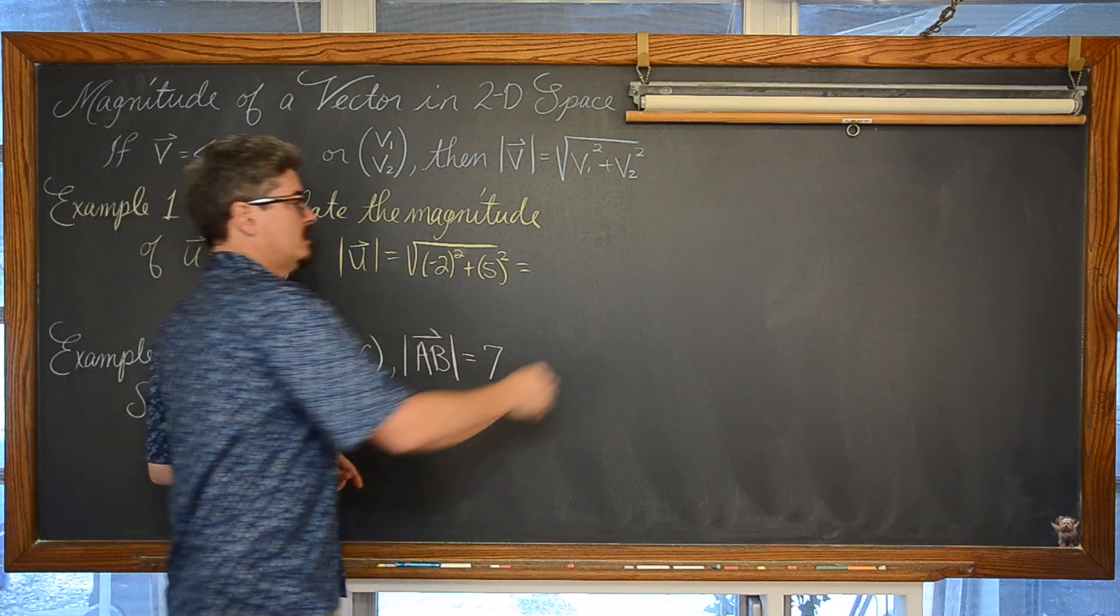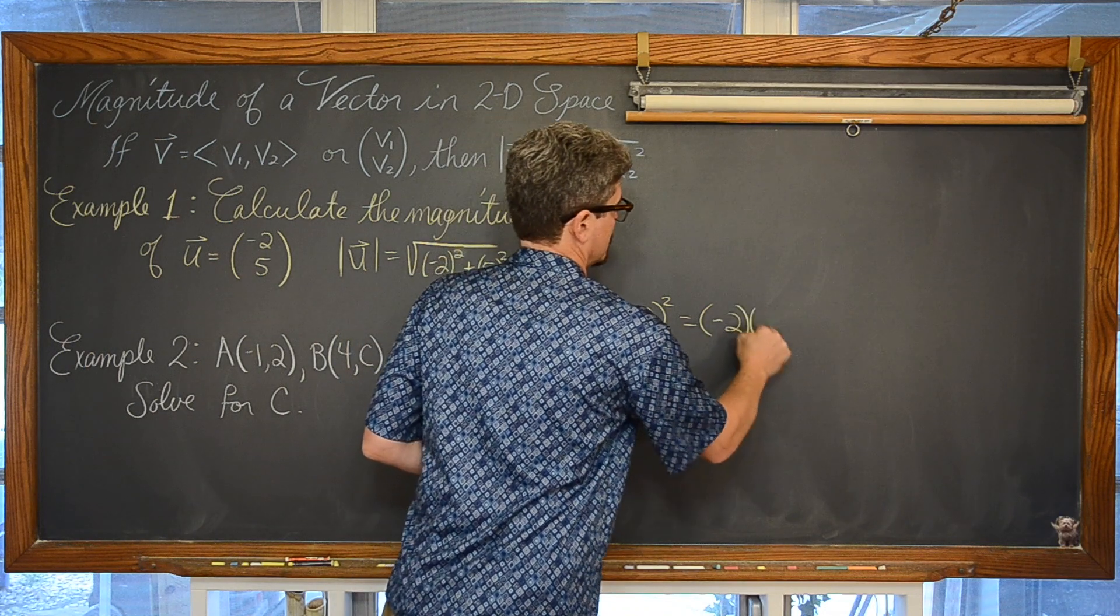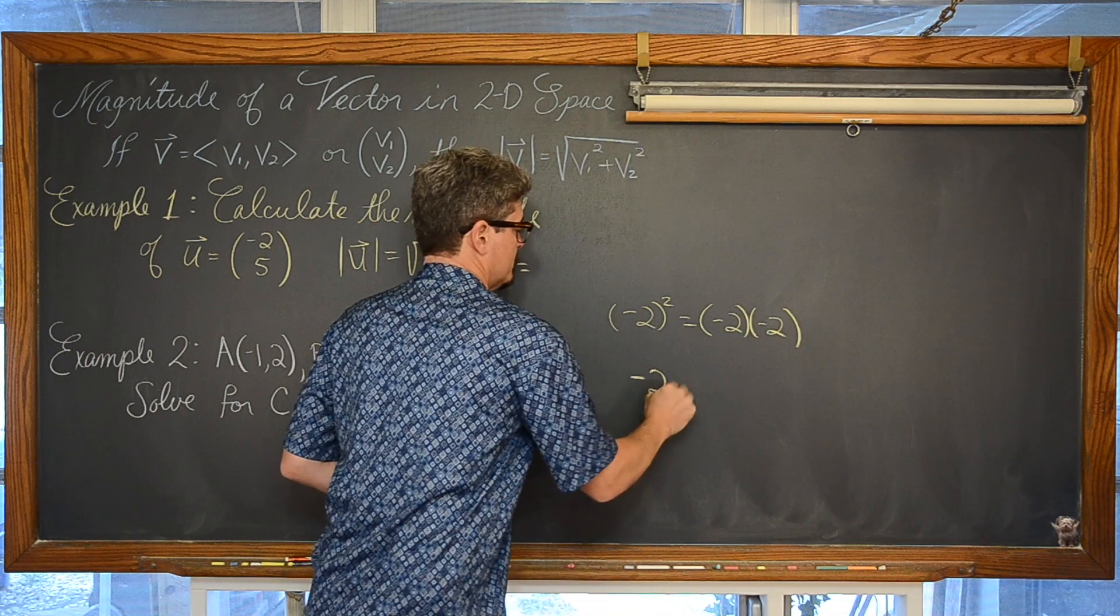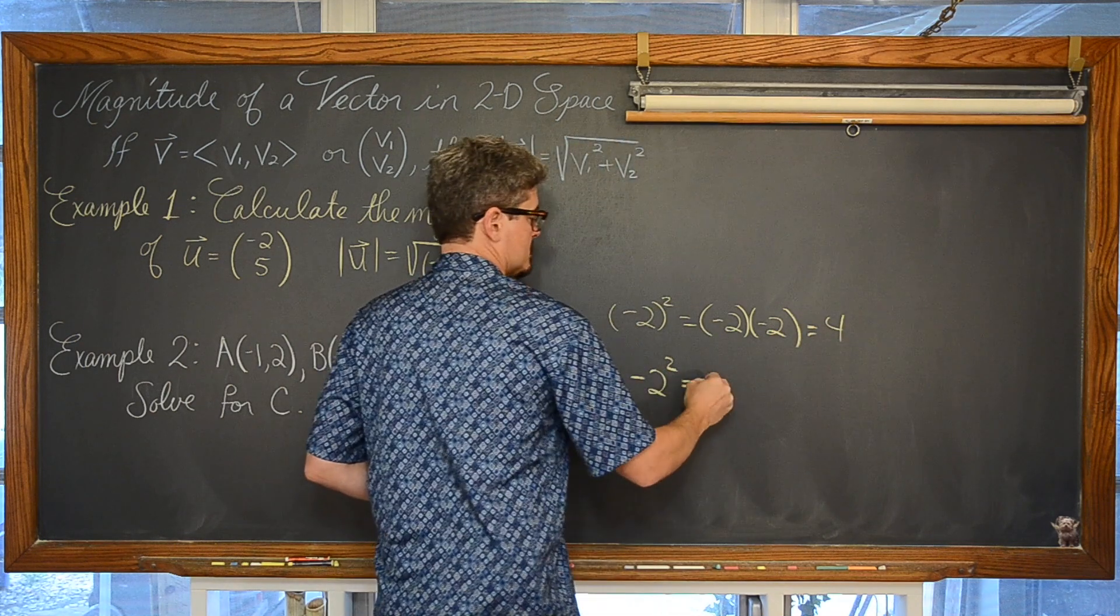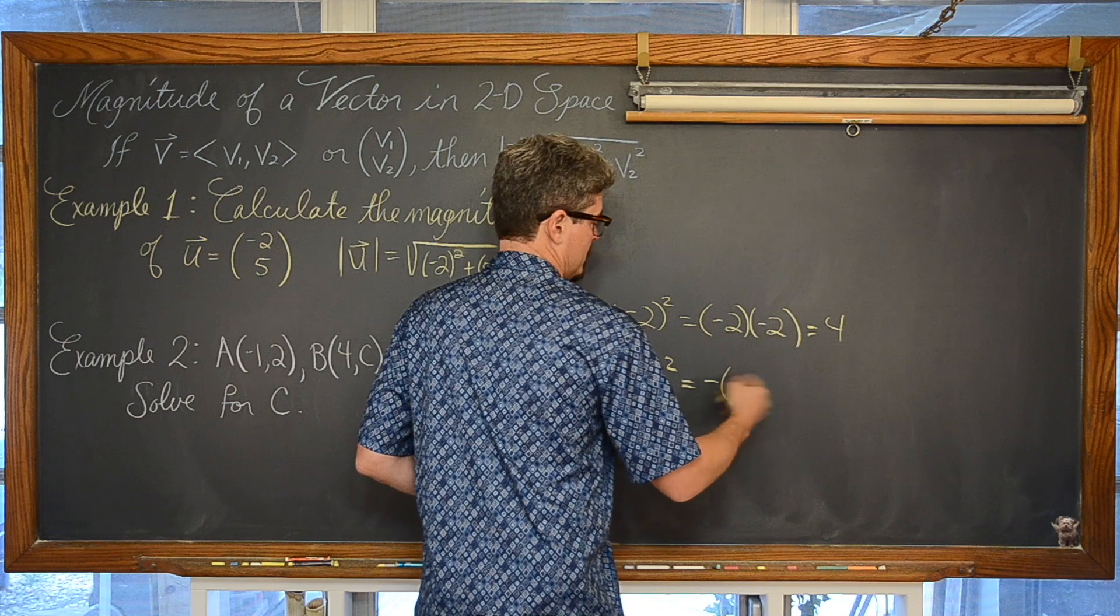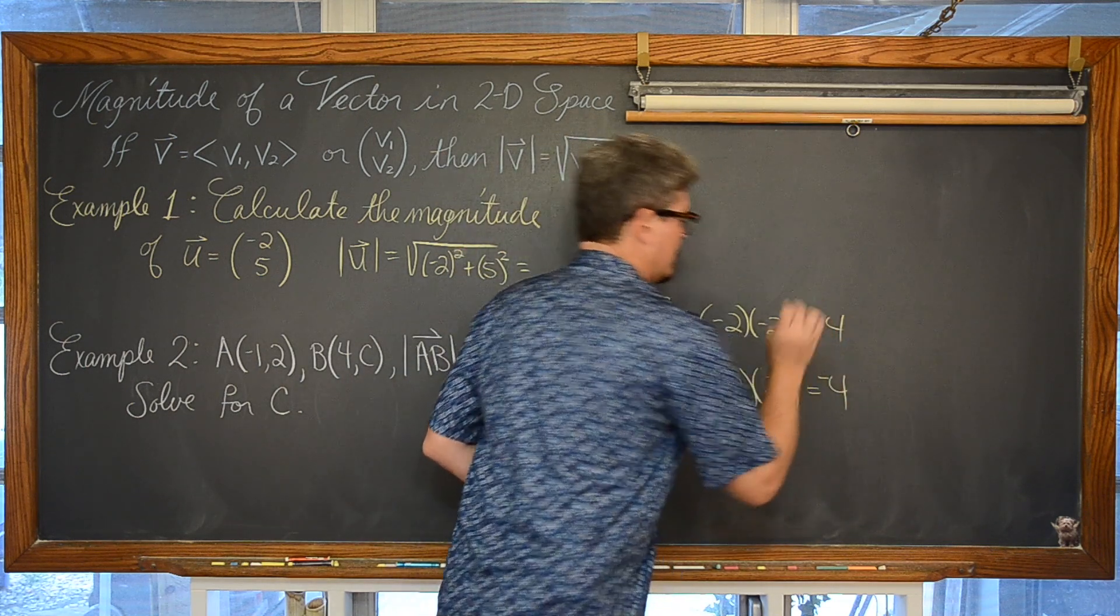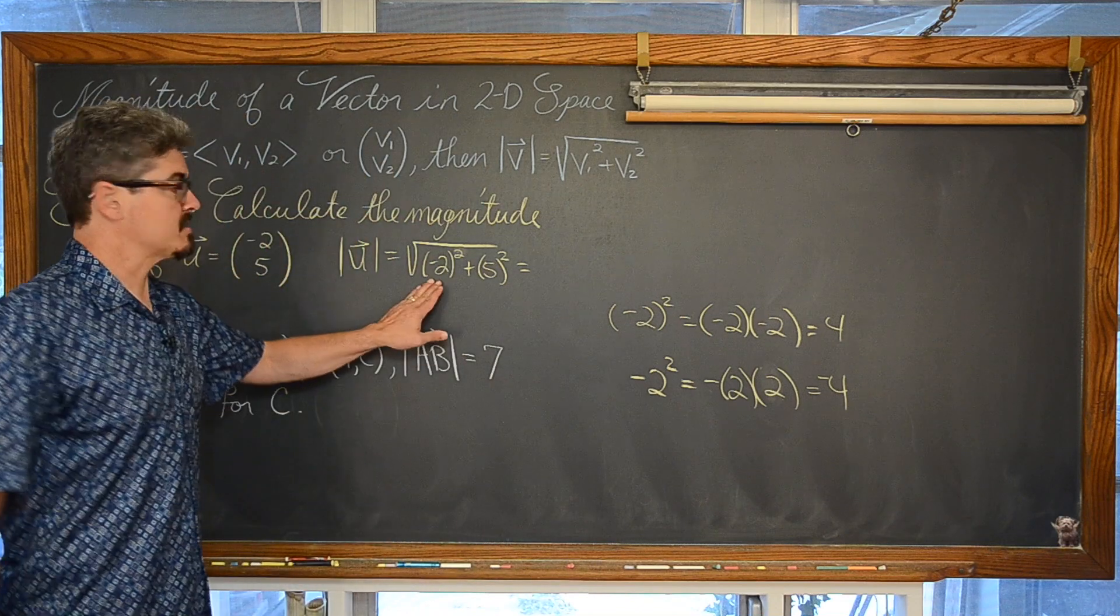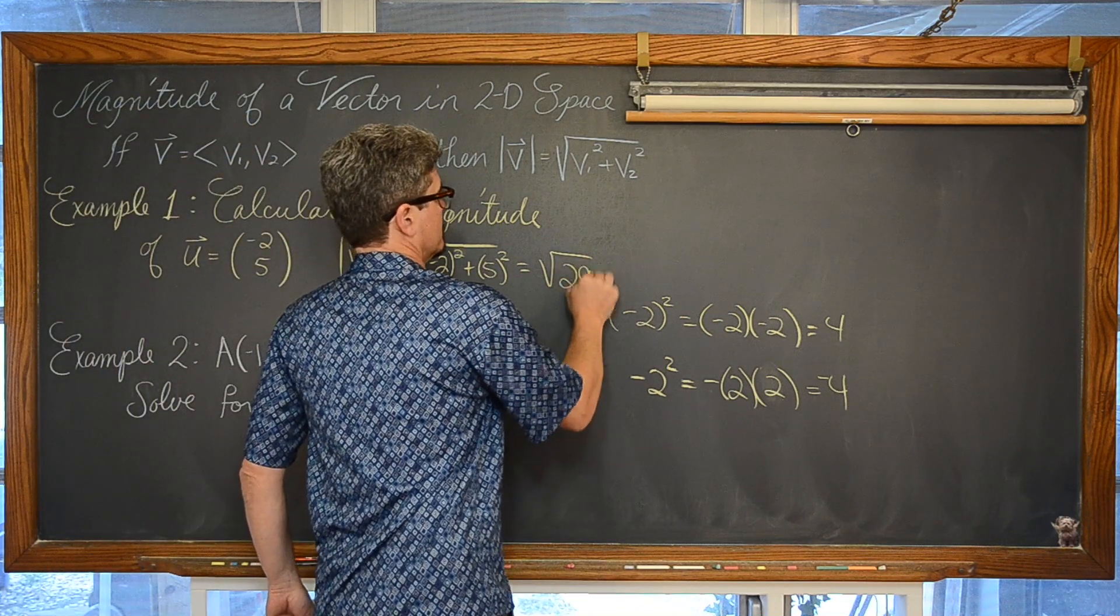But there is a difference between negative 2 squared and negative 2 squared. This is equal to 4. This, with only the negative sitting out front and only the base of 2 being squared, is equal to negative 4. So we have a positive 4 plus 25 which is equal to the square root of 29.